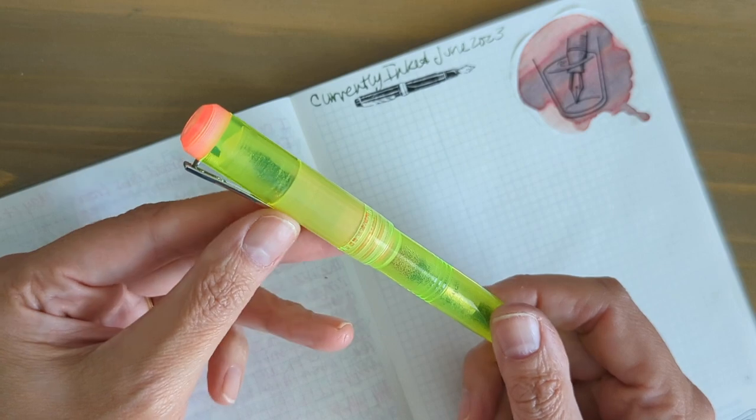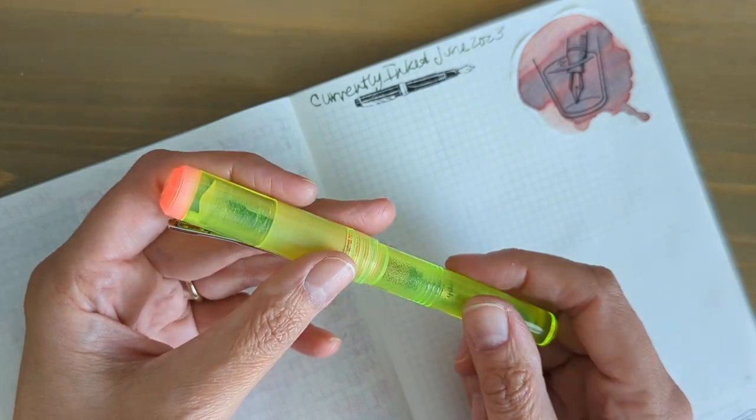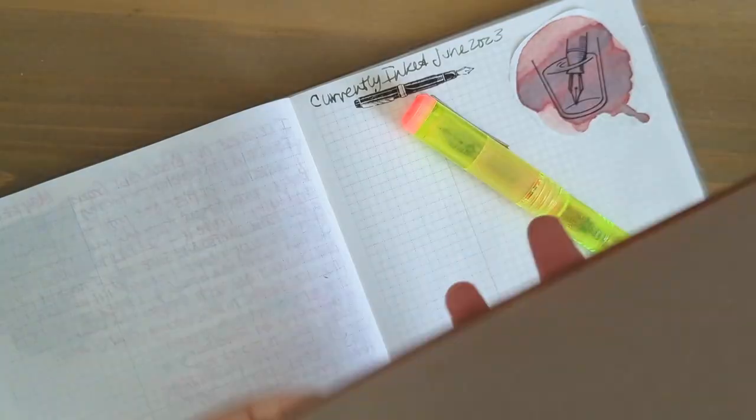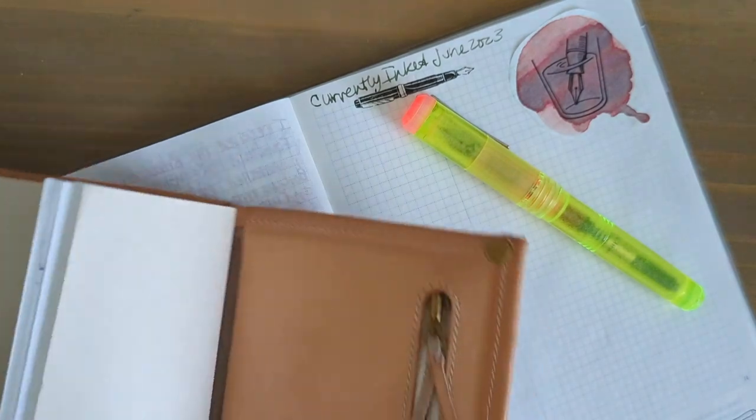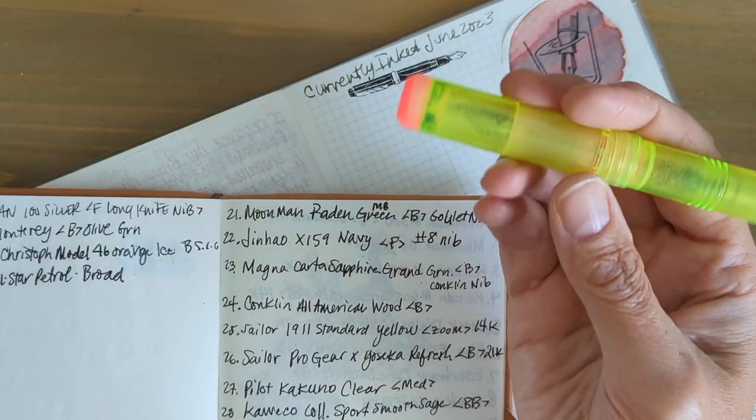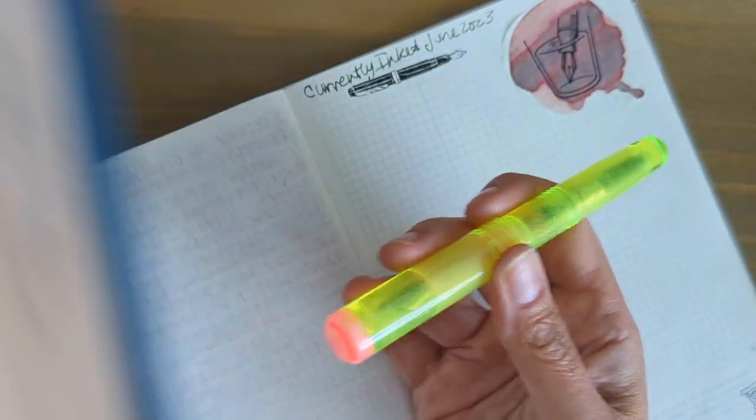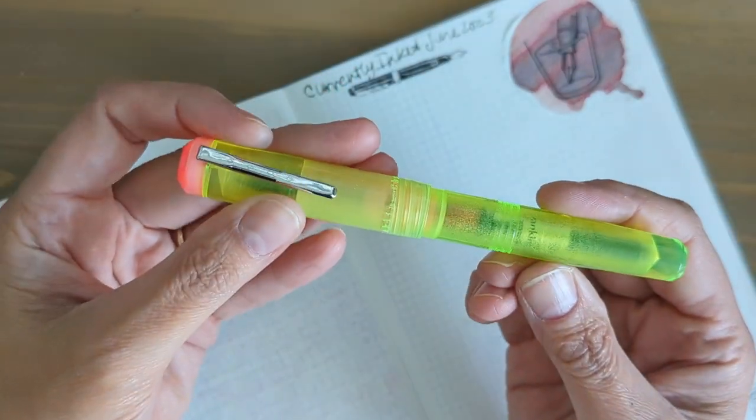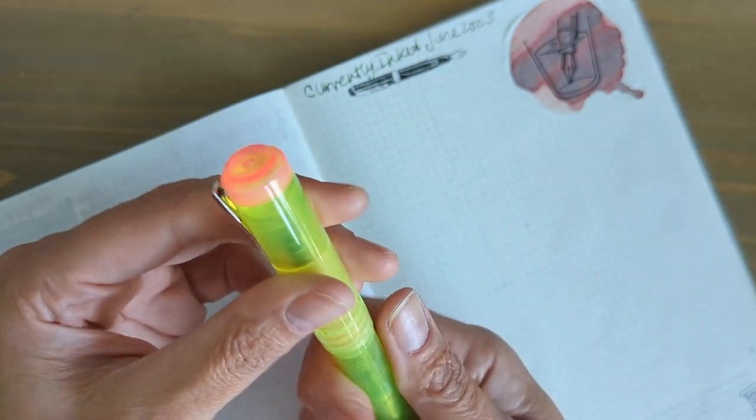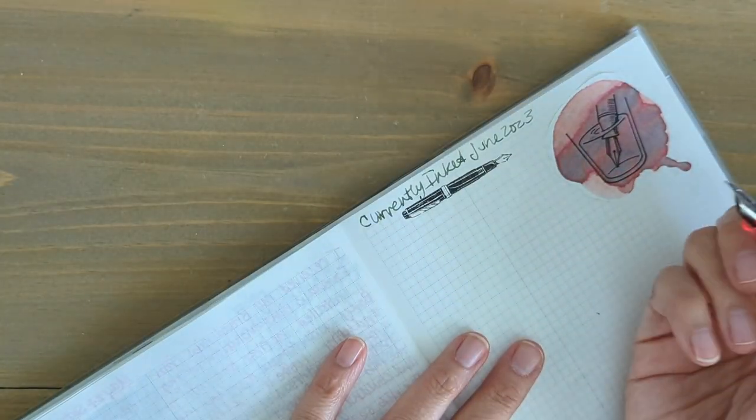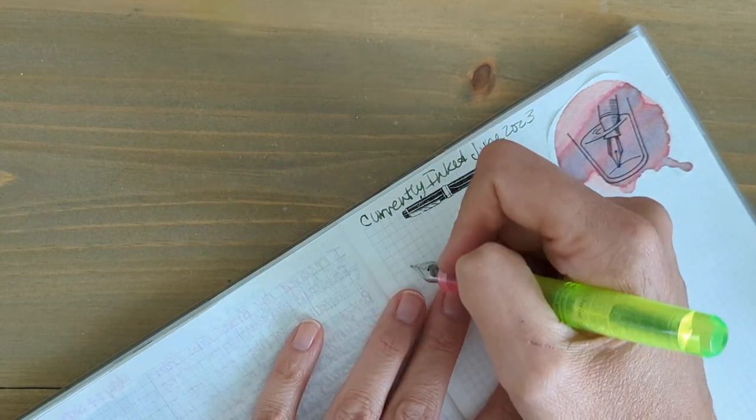This is my Franklin Christoph model 31. This is neon yellow and salmon glow. I adore this pen so much. And I inked it with coral because it just makes sense.